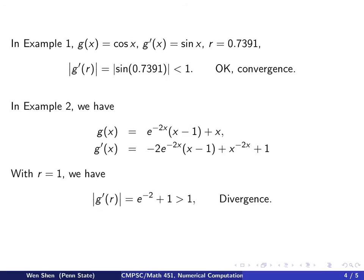So let's evaluate |g'(r)|. You plug in x = 1, this term is 0, and then you will get e^{-2} + 1, which we write here. And we see that this is a positive value, strictly bigger than 1.